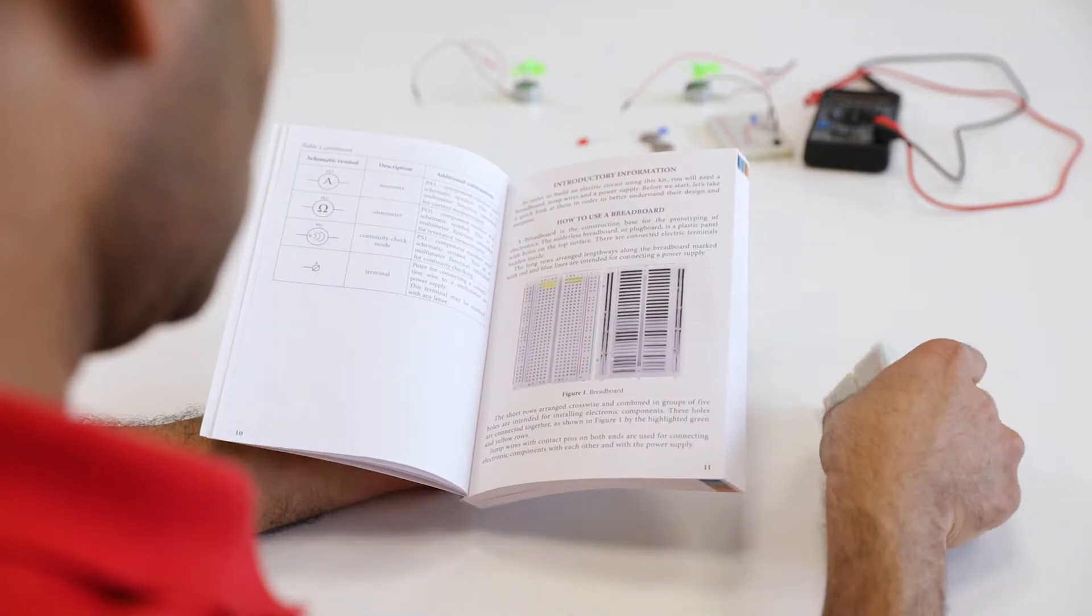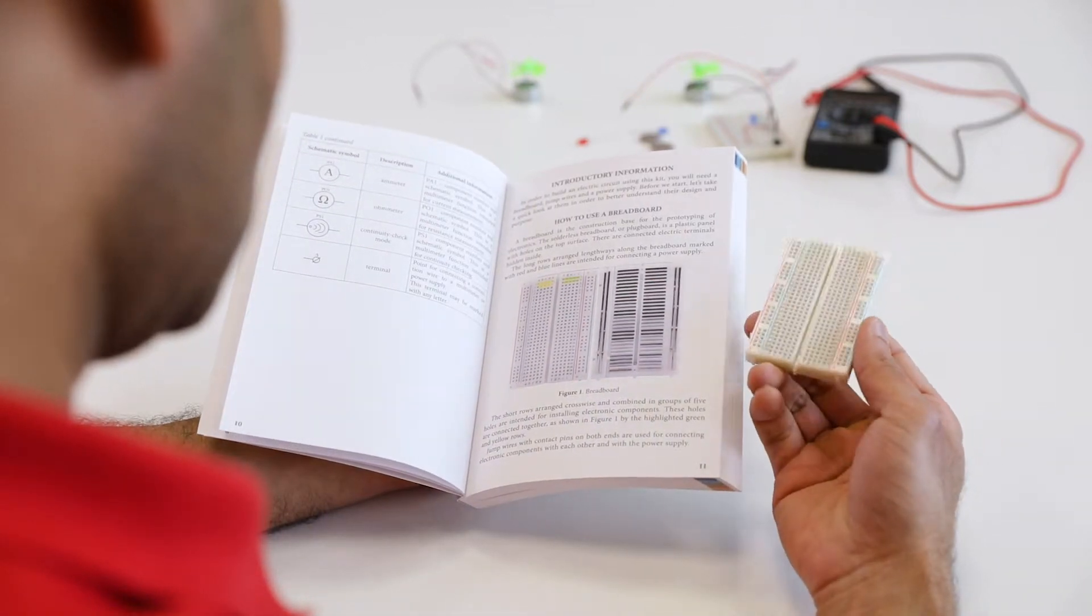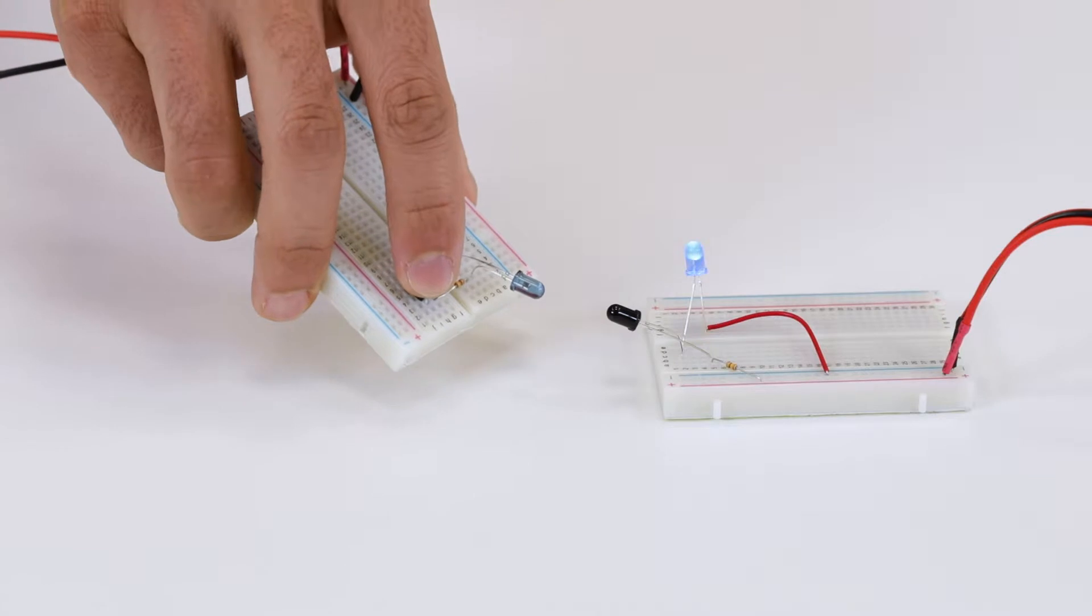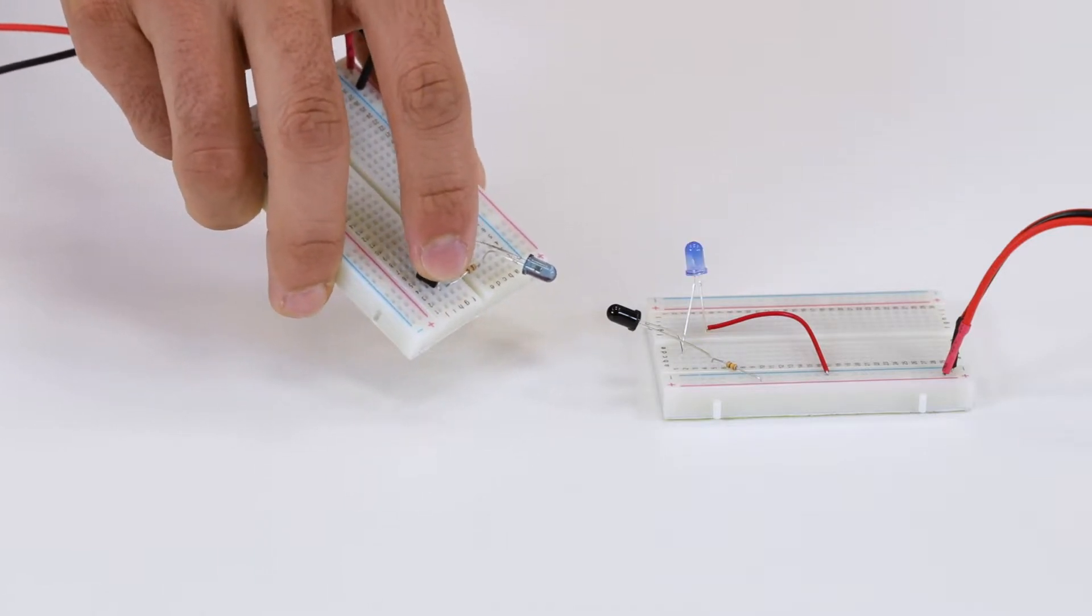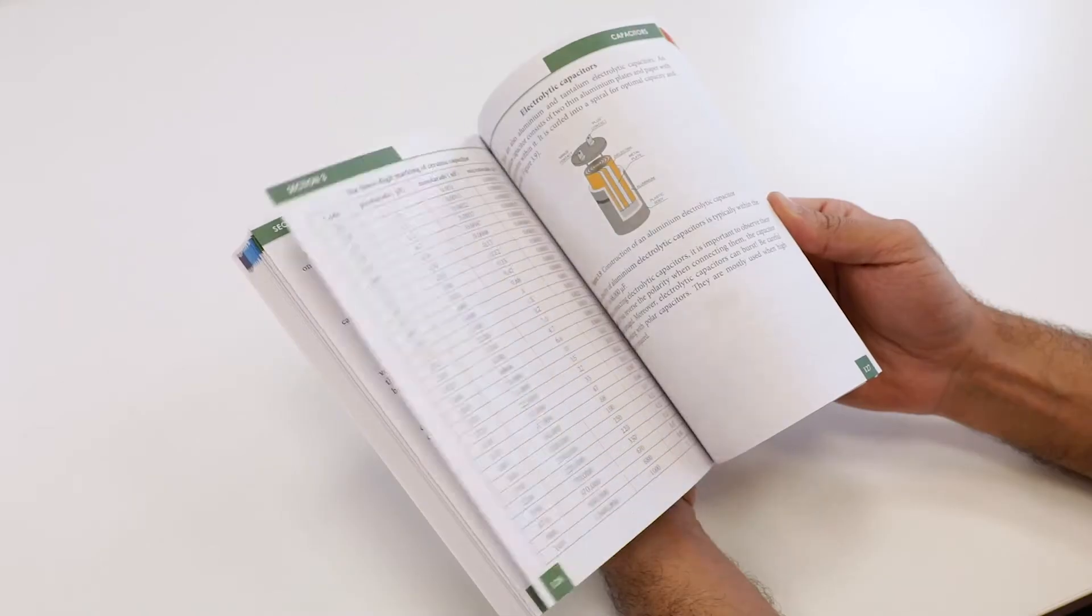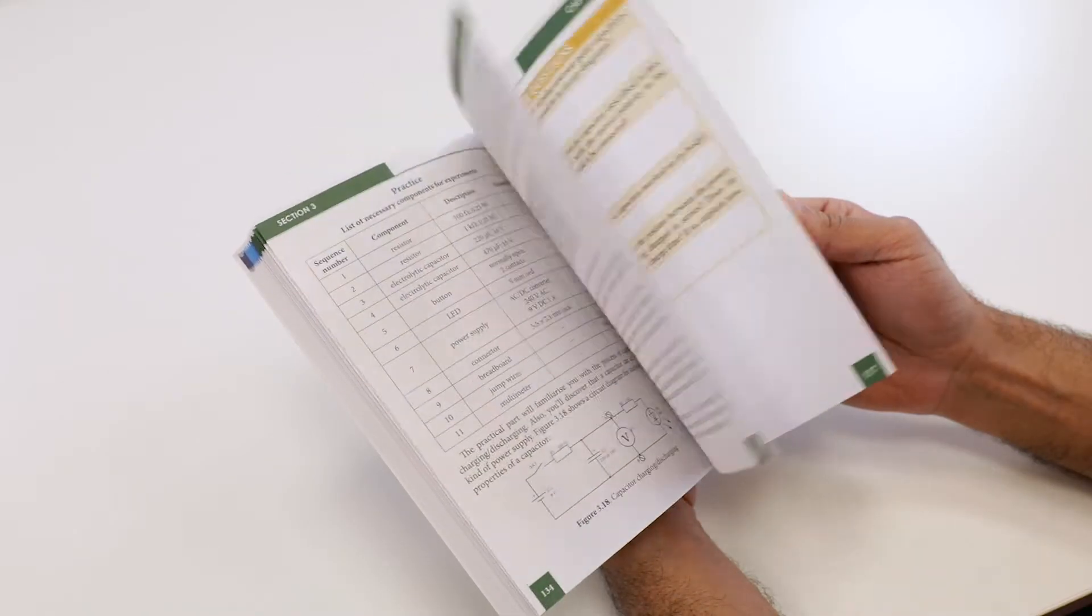When you start learning electronics, you don't have enough motivation to study theory first. You want to involve your hands with experimenting, failing many trials, and making mistakes even in the most simple circuits. Keep trying till you succeed, then you ask yourself why this circuit works this way and not another way. Only then will you be curious to learn the theory, and you'll see that learning becomes easier and more enjoyable than ever before.